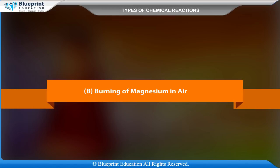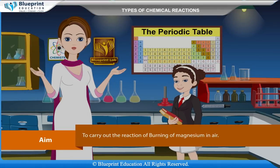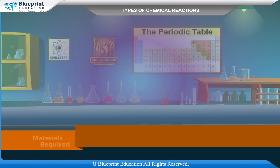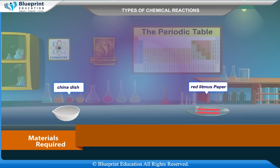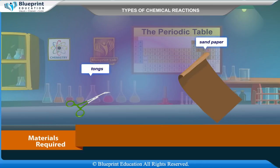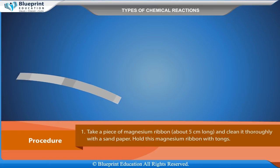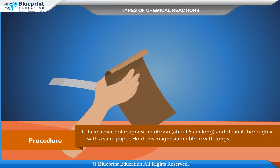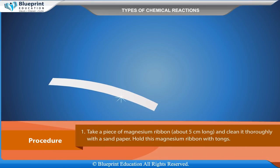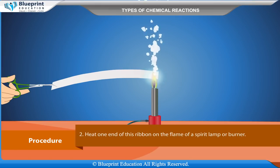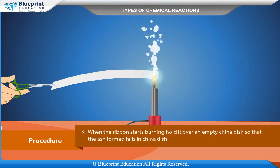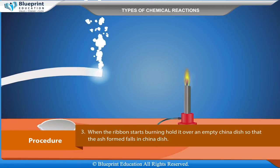Experiment B — Burning of magnesium in air. Our aim is to carry out the reaction of burning of magnesium in air. The materials required are magnesium ribbon, a burner, china dish, red litmus paper, pH paper strip, and tongs. Procedure: Take a piece of magnesium ribbon about 5 cm long, clean it thoroughly with sandpaper, hold it with tongs, and heat one end on the flame of a spirit lamp or burner.